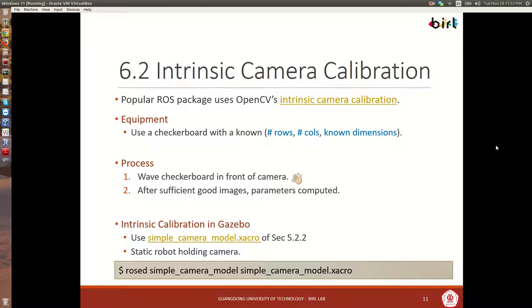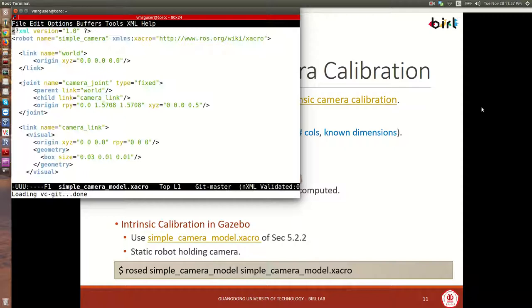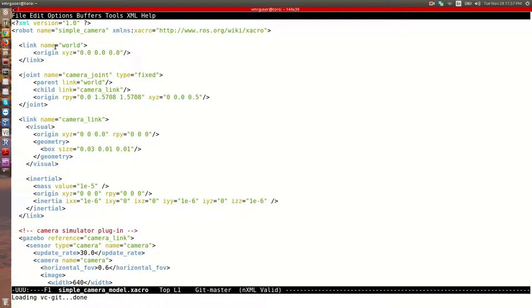To run this in simulation, we're going to build a simple camera model using a SACRO file, originally found in section 5.2.2. We're going to imagine that there's a static robot holding the camera. So let's go there and open this file. We can just use rawset to open the simple camera model package SACRO file. Here we have a link to the world set at the origin, and then the camera is modeled as a joint. Here we have camera joint. It's a fixed joint, so it will not rotate. The parent link is the world, and then the child will be that camera link.